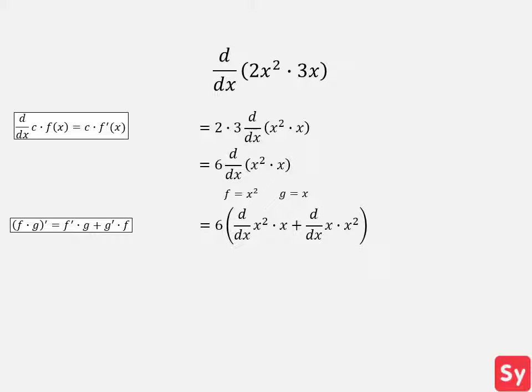This equals 6 times the sum of the derivative of x squared times x and the derivative of x times x squared. We will compute the derivative of x squared first. Using the power rule, we get that this equals 2x. We then compute the derivative of x using the power rule and get 1. We can plug these answers in. Now we can simplify this to 18x squared, our answer.